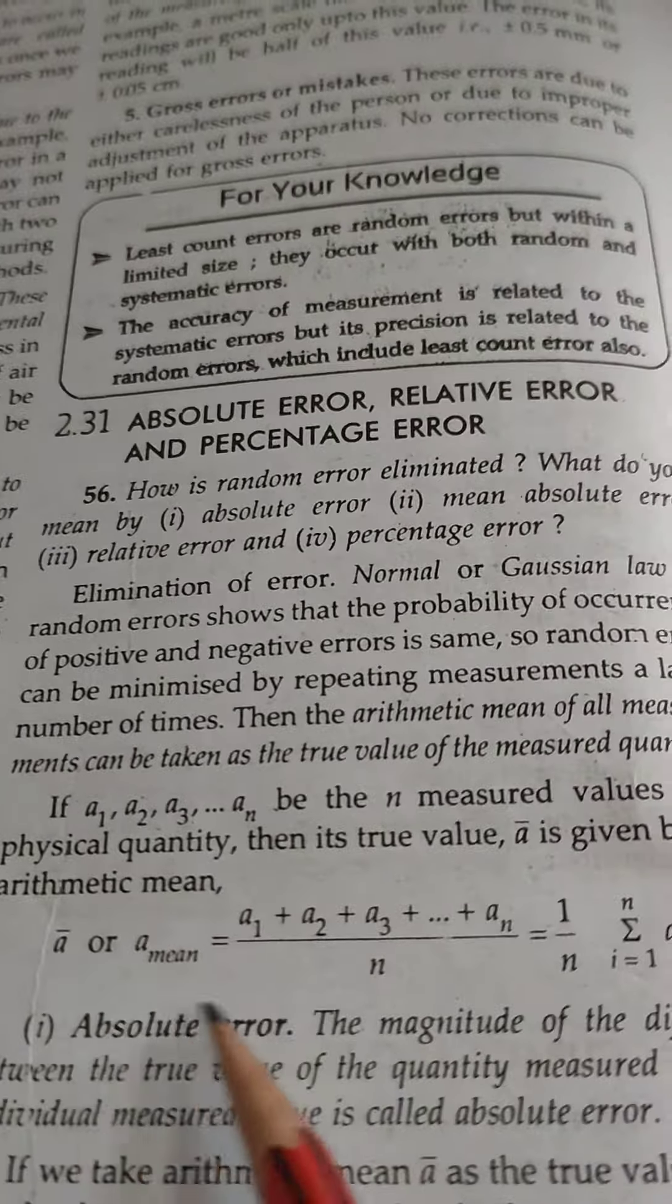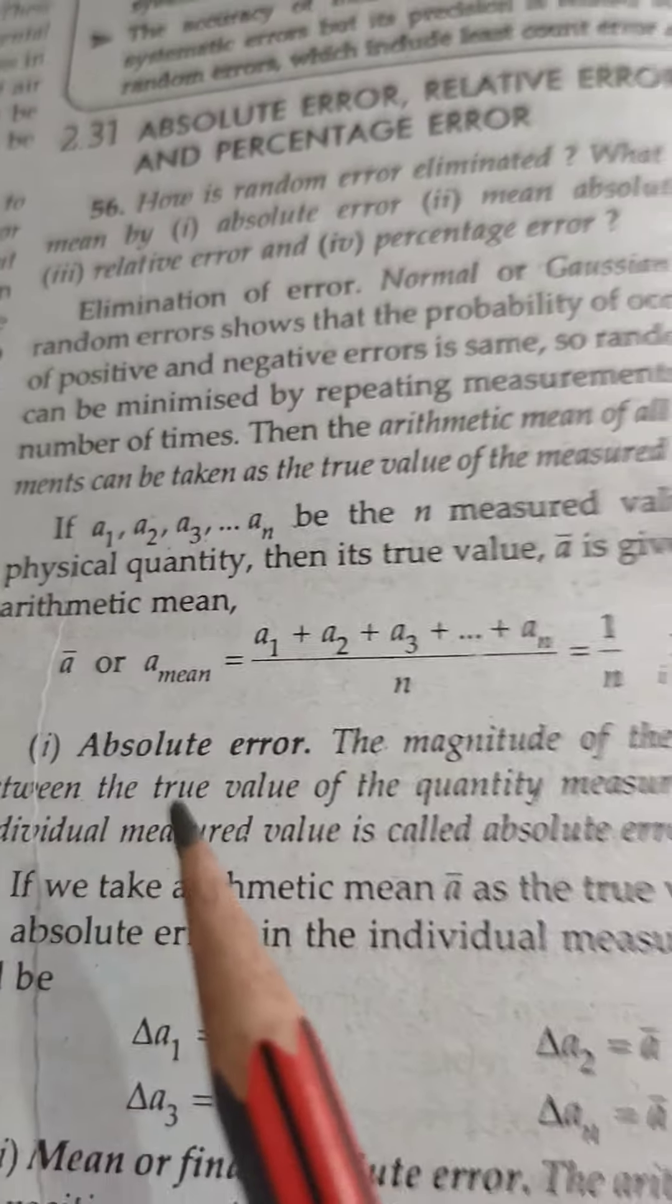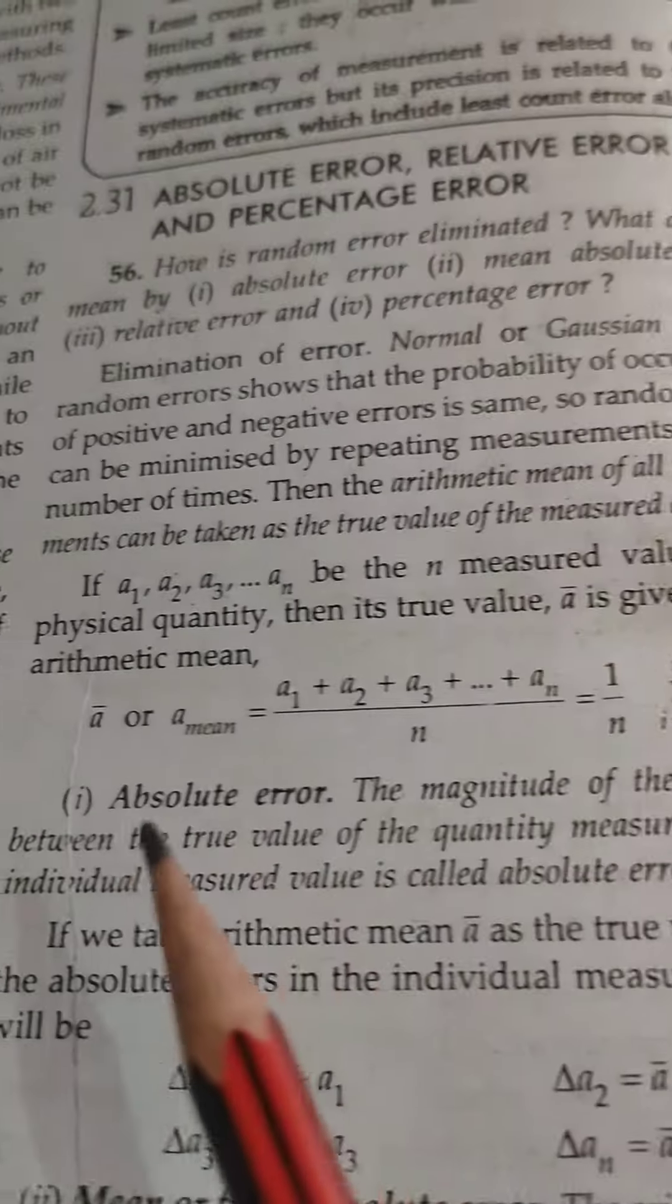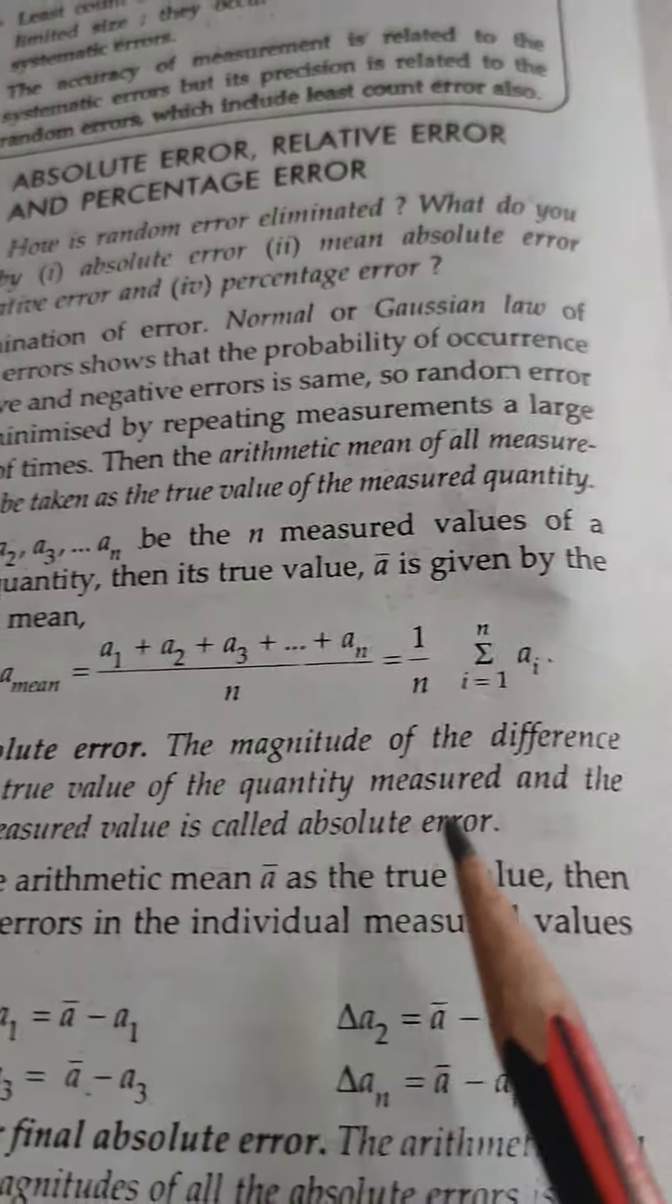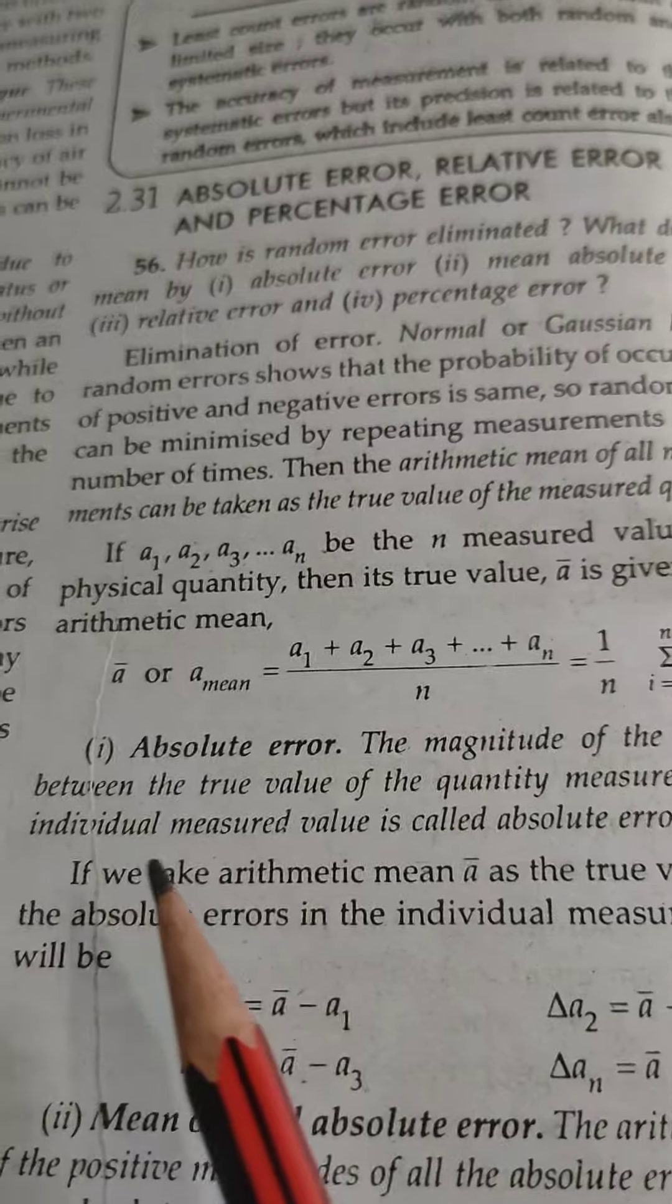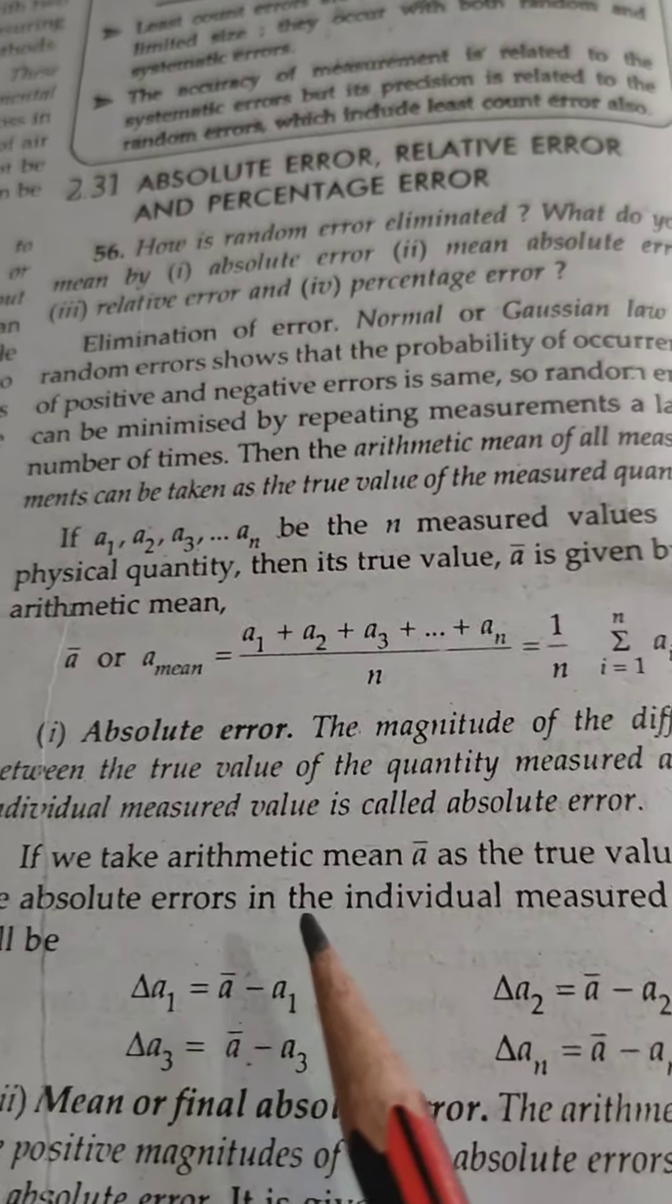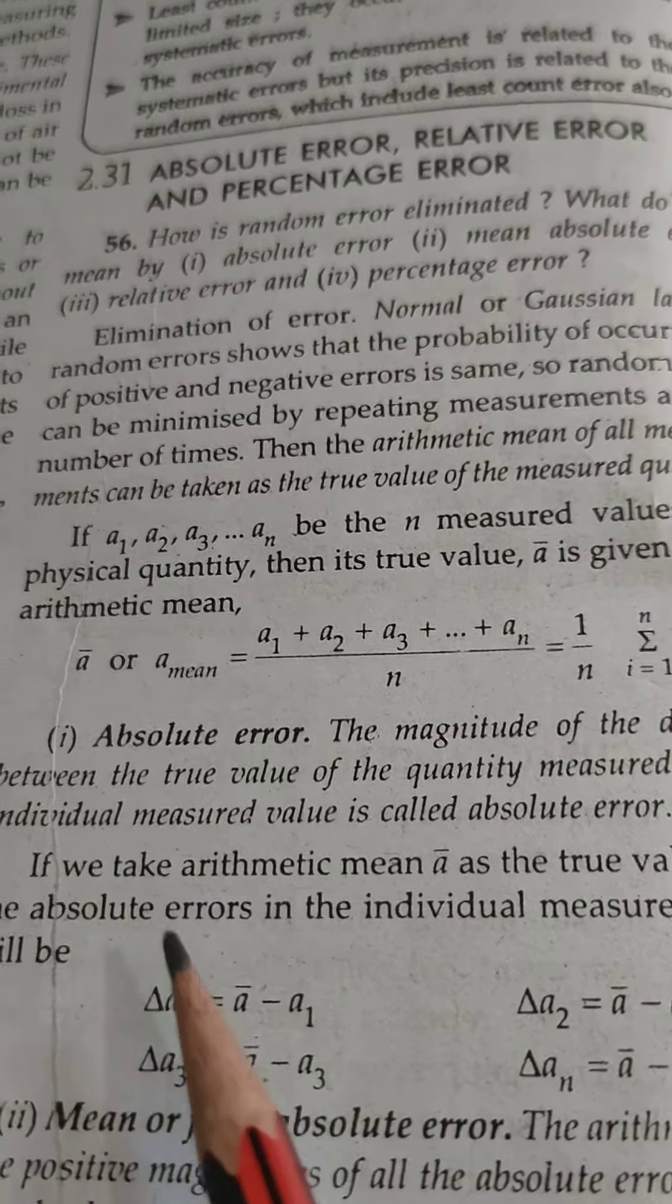This is basically the true value. The first type is absolute error. Absolute error is the magnitude of the difference between the true value and the individual measured value.